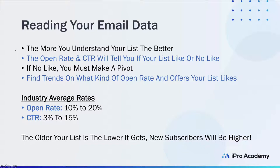When it comes to industry average rates across all industries, the open rate hovers around 10 to 20%, depending on your relationship with your list, content quality, and subject line. The click-through rate hovers around 3 to 15%. The older your list, the lower it gets; new subscribers will fluctuate that number higher. Try to stay between 10 to 20% open rate and 3 to 15% CTR.